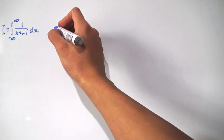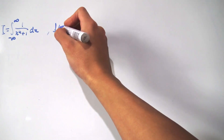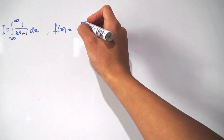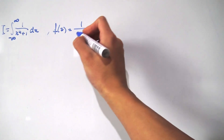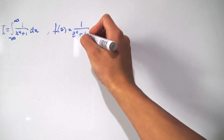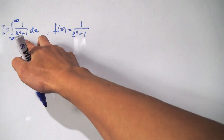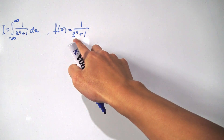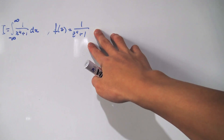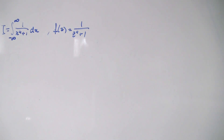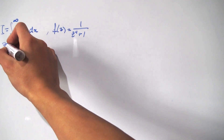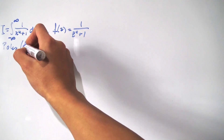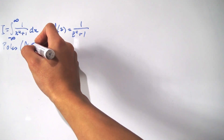Let's define for ourselves a new function, f of z, and let it be equal to 1 over z to the 4th power plus 1. So we're moving away from real-valued inputs to complex-valued inputs. It'll be nice if we can know where the singularities are — so where the poles are. Let's calculate the poles of f of z.